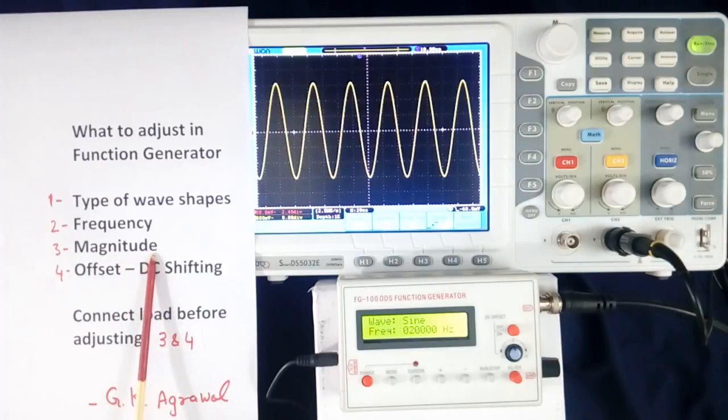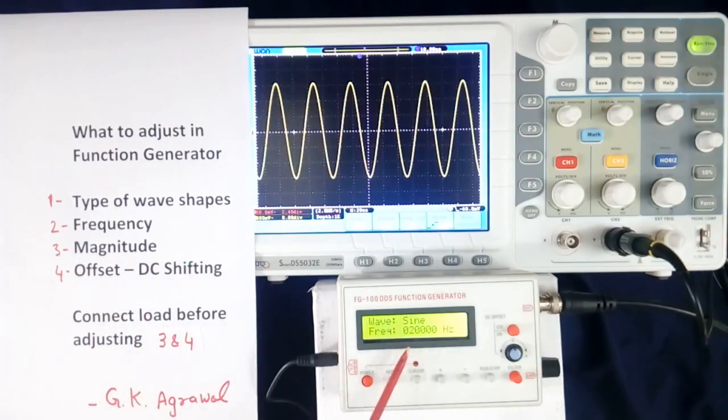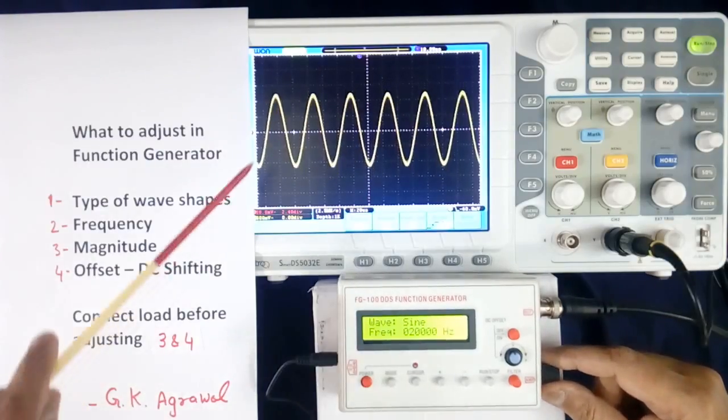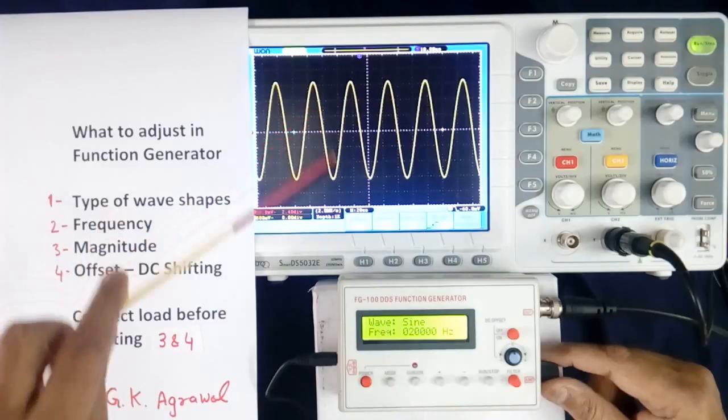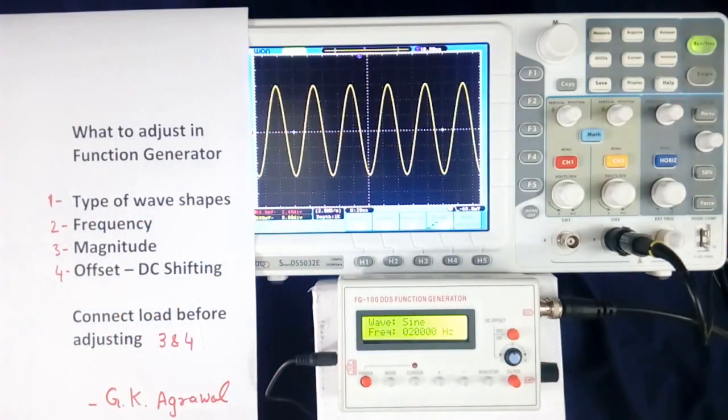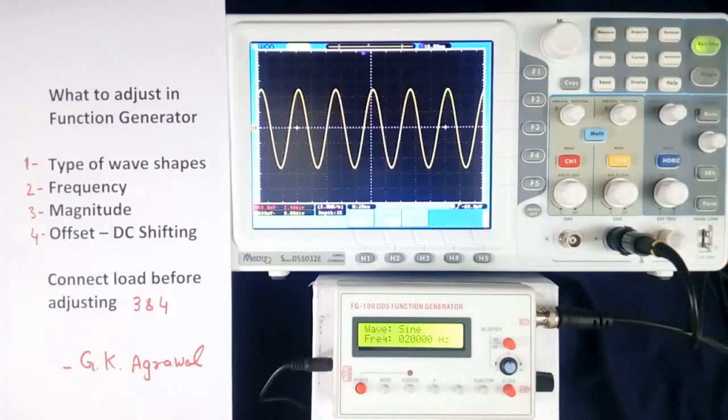Now magnitude. In my function generator, magnitude can be adjusted using this knob. By rotating this, we can change the magnitude of this wave shape. In different function generator, this arrangement will be different.